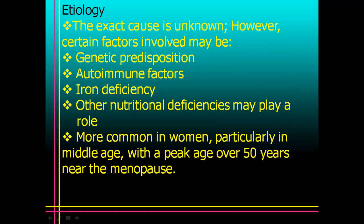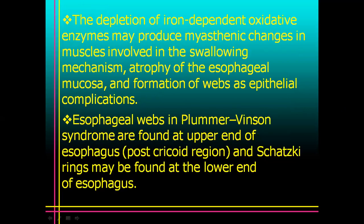Iron deficiency is usually seen in these patients; other nutritional deficiencies may play a role as well. It is more common in women, particularly in middle age, with a peak age over 50 years near the menopause. The depletion of iron-dependent oxidative enzymes may produce myasthenic changes in muscles involved in the swallowing mechanism, causing atrophy of the esophageal mucosa and formation of webs.